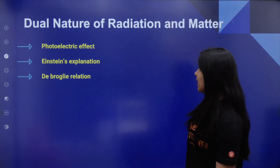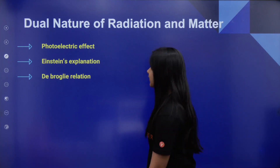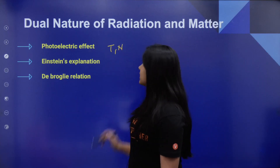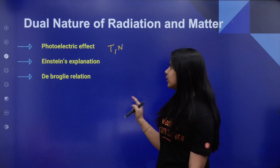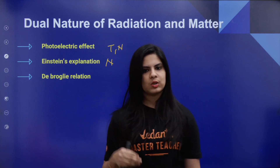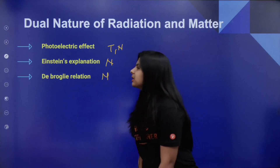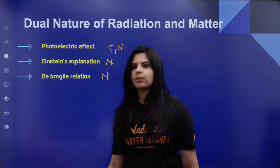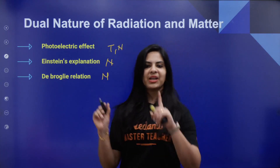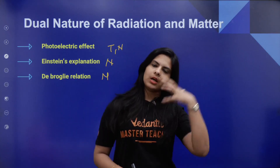Next is Dual Nature of Radiation and Matter. Photoelectric Effect and Einstein's Explanation — numerical-based questions. De Broglie Relation — numericals. Theory-based questions are also expected. If you study the theory-based questions well and the numerical-based questions, you will be able to answer confidently.